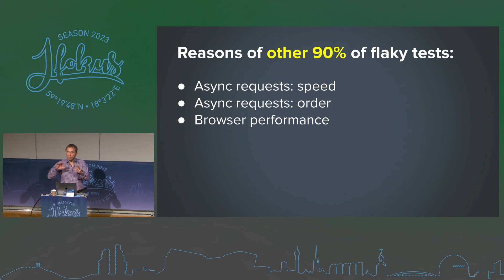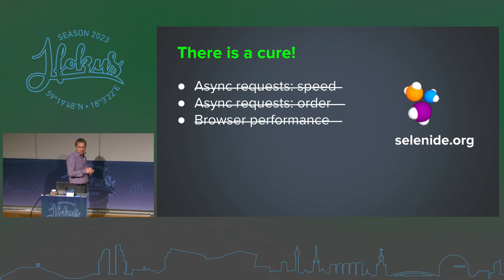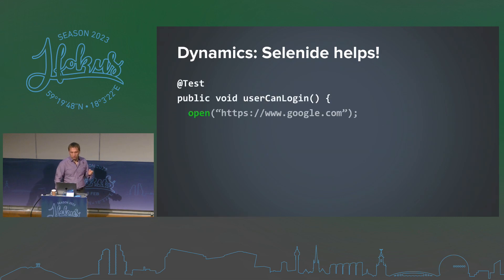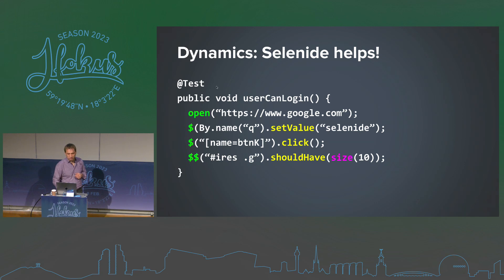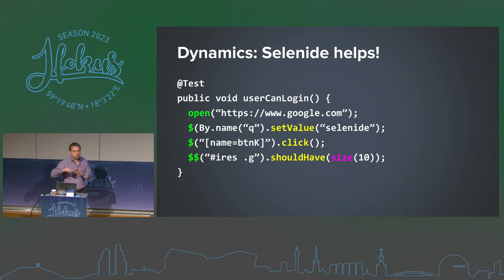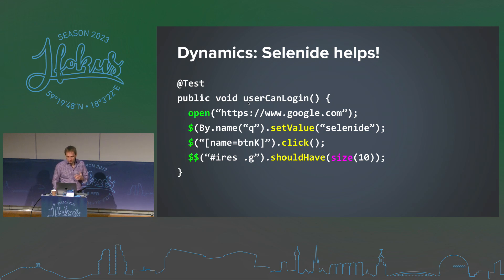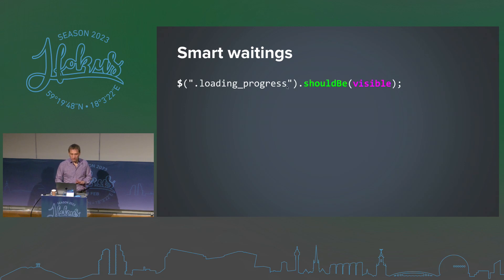The remaining flaky tests are more interesting: speed of asynchronous requests, order of requests, browser performance, pop-ups, and so on. There is good news — there's a library that solves all of this out of the box, and that's Selenide, created by me. A usual Selenium test rewritten in Selenide syntax looks a little bit shorter, nicer, and more readable. But the biggest advantage is that it's smart — for example, a check like '$$().shouldHave(size(...))' has built-in smart waiting. It can wait a little bit if elements are not yet rendered or loaded.